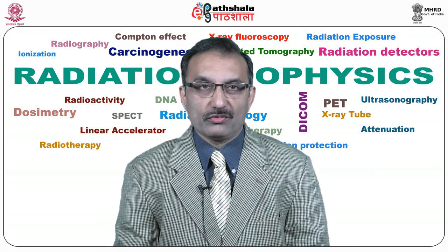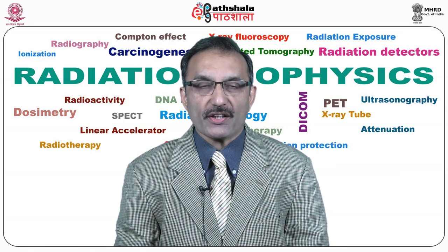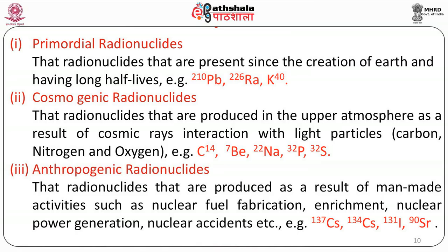We should know what are the sources of radioactivity. There are three different sources. First, primordial radionuclides — those present since the creation of Earth, having a half-life much longer. Examples include lead, radium, and potassium. We have potassium in our body as well. Second, cosmogenic radionuclides — those produced in the upper atmosphere as a result of cosmic ray interaction with light particles like carbon, nitrogen, and oxygen — giving radionuclides like carbon-14, beryllium, sodium, phosphorus and sulfur.